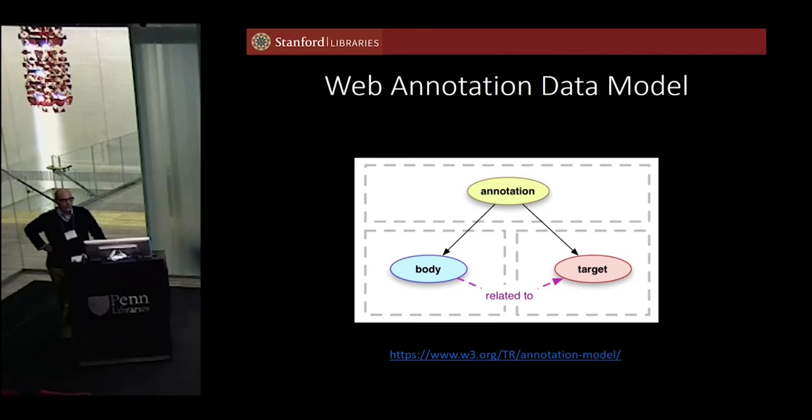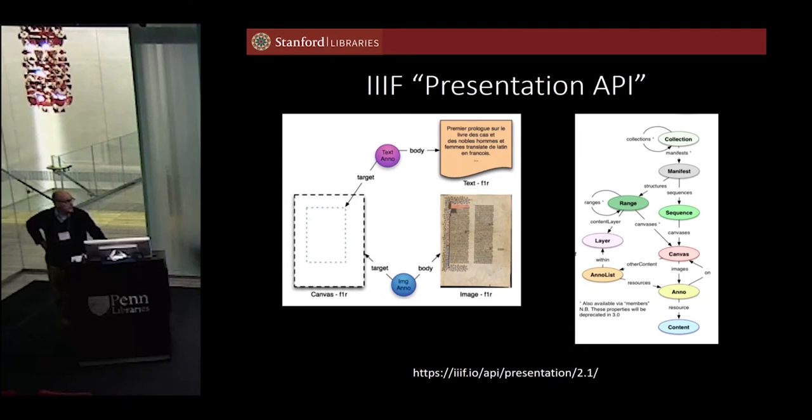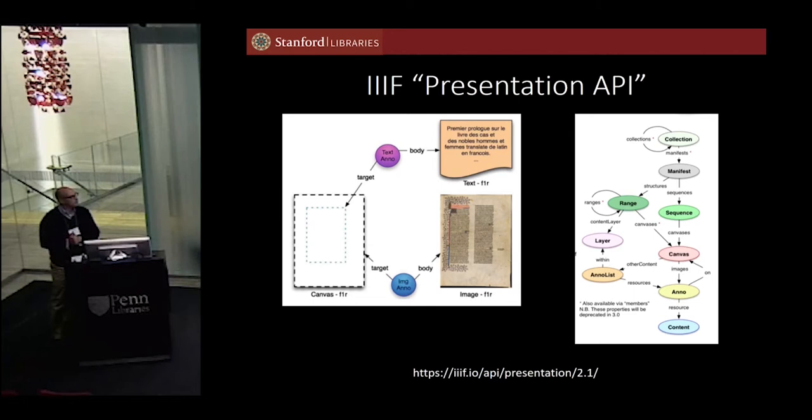After a morning of seeing wonderfully complex data models, I figured I would just end the day with the easiest one that's out there. All you have to have is a target, a body, and some way of linking the two in a relationship. On that is built a concept for talking about books and other text-bearing objects, images, and things like that, which is the shared canvas data model. The shared canvas is a contextual space upon which everything else is mapped by web annotations — images being mapped onto that conceptual space.